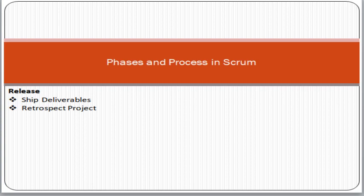The last phase is the Release Phase. In this phase we ship the deliverable to the customer — we deploy the release to production as planned. Finally, we do the Project Retrospective, which is the last process of the project. It is a post-mortem of the whole project — discussing what went wrong overall, what went right, and what needs to be improved for future projects.